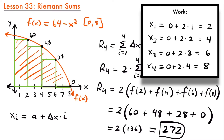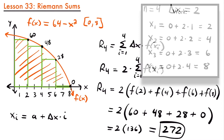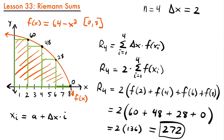Then i changes to 2 for the next term: 0 plus 2 times 2 equals 4. For the third term, 0 plus 2 times 3 equals 6. And for our last term, 0 plus 2 times 4 equals 8. So even though we found these points by looking at the graph, this formula works without the graph, given that you are using right endpoints.